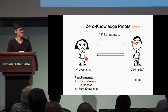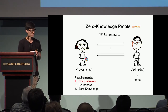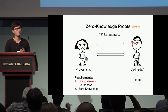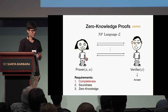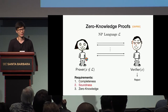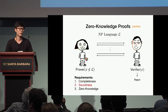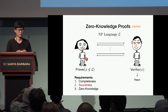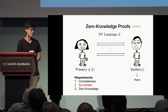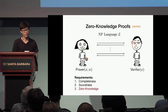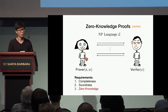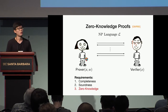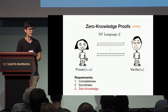Completeness says that if some statement X is contained in the language L, then an honest prover following the protocol should be able to convince the verifier to accept the proof. Soundness says that if some statement X is not contained in the language, then even a dishonest prover should not be able to convince the verifier to accept the proof.